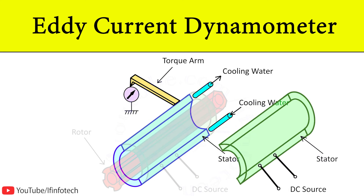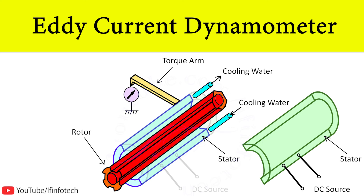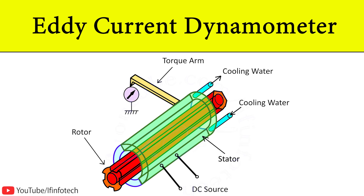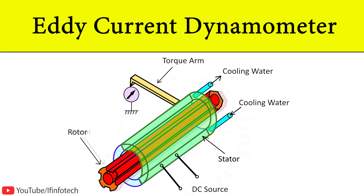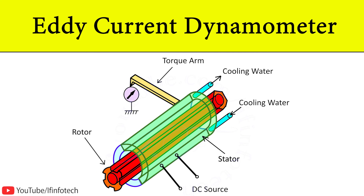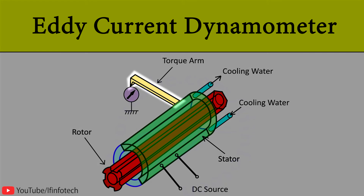During operation of the dynamometer, the rotor turns and causes a constant change in flux density at all points of the stator, resulting in the formation of eddy currents which oppose the motion of the rotor. This opposing resistance is measured by a brake drum in the form of torque, from which shaft power can be calculated.